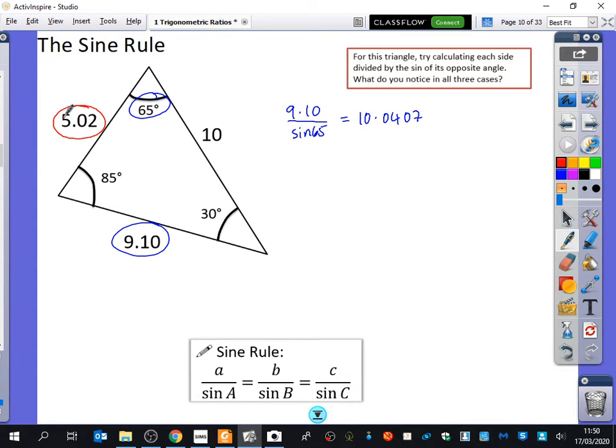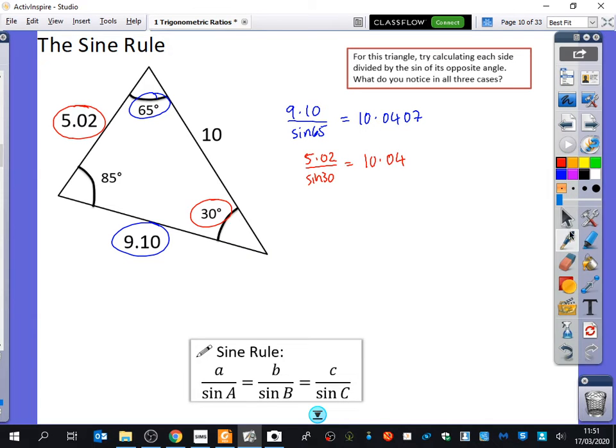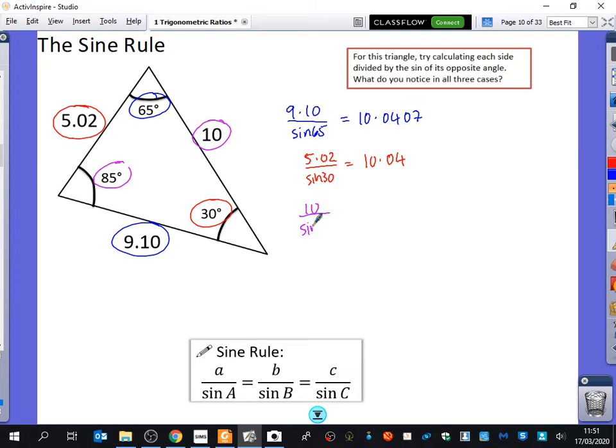When I look at this side and I divide it by its angle, I get 5.02 divided by the sine of 30. So, it's 5.02 divided by sine 30 and you get 10.04. And then, when you look at this side, last of all, divided by the sine of 85, you get 10 divided by sine 85. And you get 10.0381 like this.